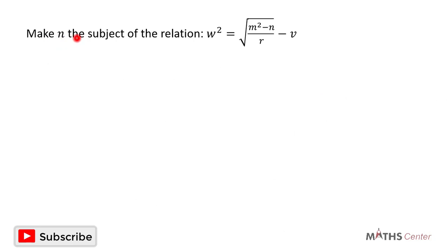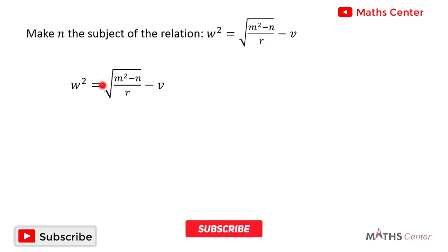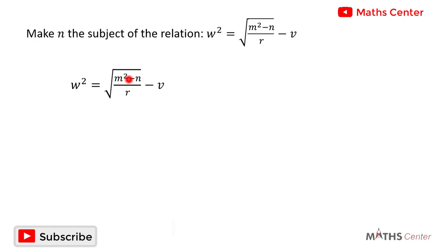Make n the subject of the relation: w squared is equal to the square root of m squared minus n, divided by r minus v. We have this relation and the question wants us to make n the subject.